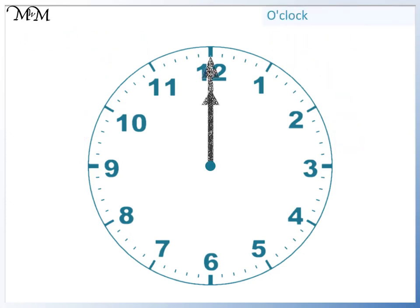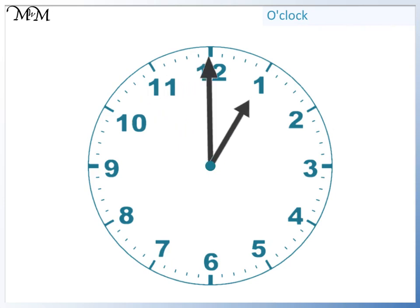We are now going to look at reading hours. We will start here. The hour hand is pointing at the 1. This tells us that the hour is 1. The minute hand is pointing at 12. This means that no minutes have passed — the hour is exactly 1. We call this 1 o'clock.